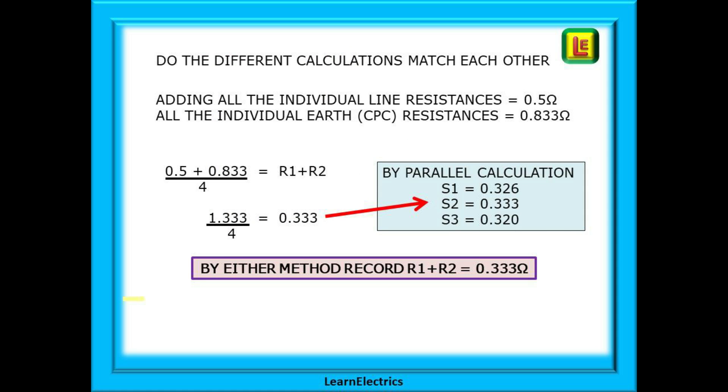And the next question. Do the different calculation methods match each other? If we use the divide by 4 method, we add the total line resistance which is 0.5 ohms to the total earth resistance of 0.833 ohms from the slide at the beginning. 1.33 divided by 4 is 0.33 ohms. Now the parallel method and our multiply, add, divide calculations. Choose the highest value of 0.33 ohms and bingo, they are the same. Either method works.